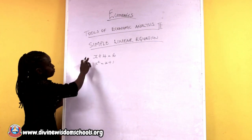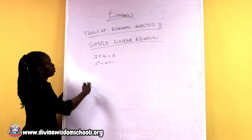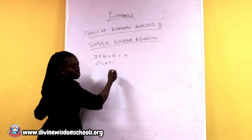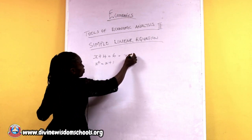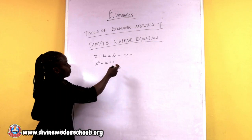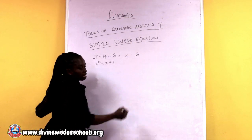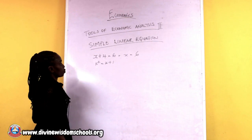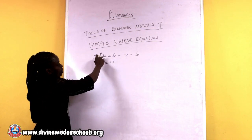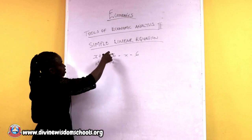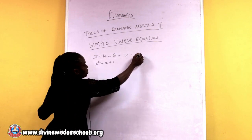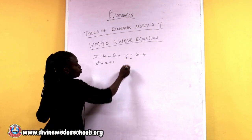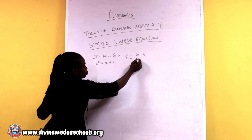Based on the first equation — x plus 4 equals 6 — you can solve it by bringing out X, writing the 6 on the right-hand side, and when plus 4 crosses the equality sign, it becomes minus 4. So X equals 2.